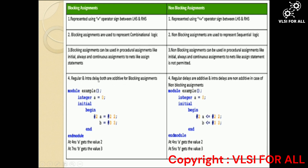The fourth difference is that regular and intra-delays are both additive for blocking assignments. In non-blocking assignments, regular delays are additive but intra-delays are non-additive. In the example shown, for blocking assignments: #2a = #2 2 and b = #3 3, where #2 outside the statement is the regular delay and the inner #2 is the intra-delay. Since both are additive, 2 is assigned at 4 nanoseconds and 3 is assigned at 2+2+3 = 7 nanoseconds.